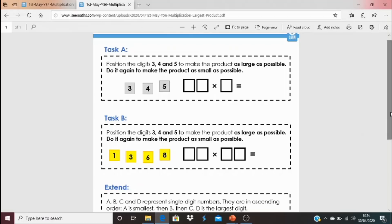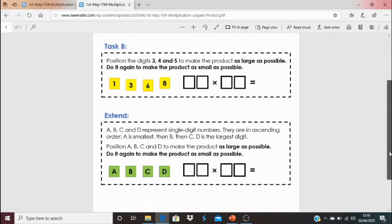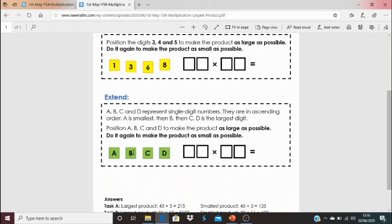If you would like an eye-wateringly difficult extension, then have a go at the extend task. This time, we're using letters A, B, C and D. Those letters represent a single digit. And A is smaller and then B gets a bit larger. C is larger than A and B. And D is the largest of those four digits. And it's about thinking, well, where would you position them to make the answer as large as possible? I'd love to know how you get on if anyone tries the extend task. Good luck with that one.